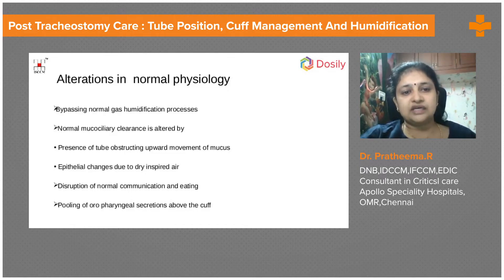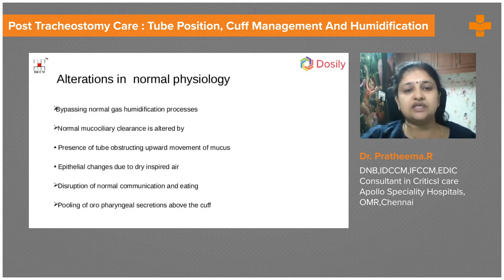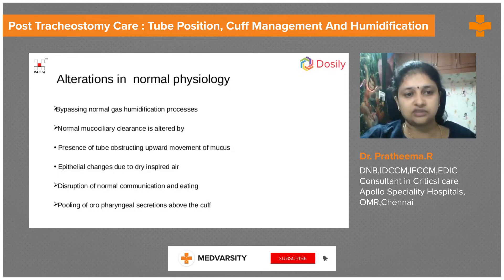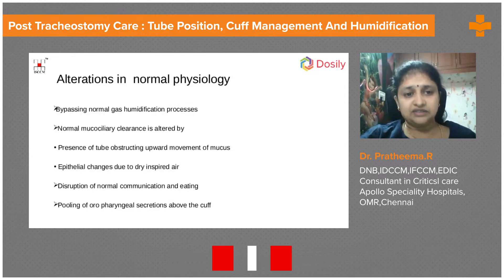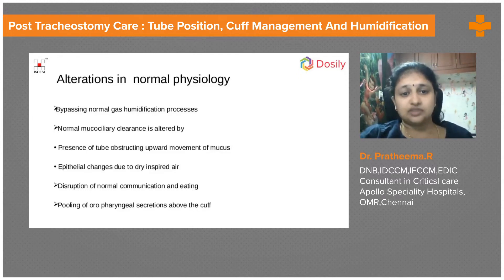Mucociliary clearance is also altered because the tube is sitting there and hindering the movement of mucus. We know there is ciliary movement from the airway from distal to proximal, and mucociliary clearance happens through that same process. The tube obstructs this usual clearance, and epithelial changes also occur due to dry inspired air — there is no proper warmth or humidification.